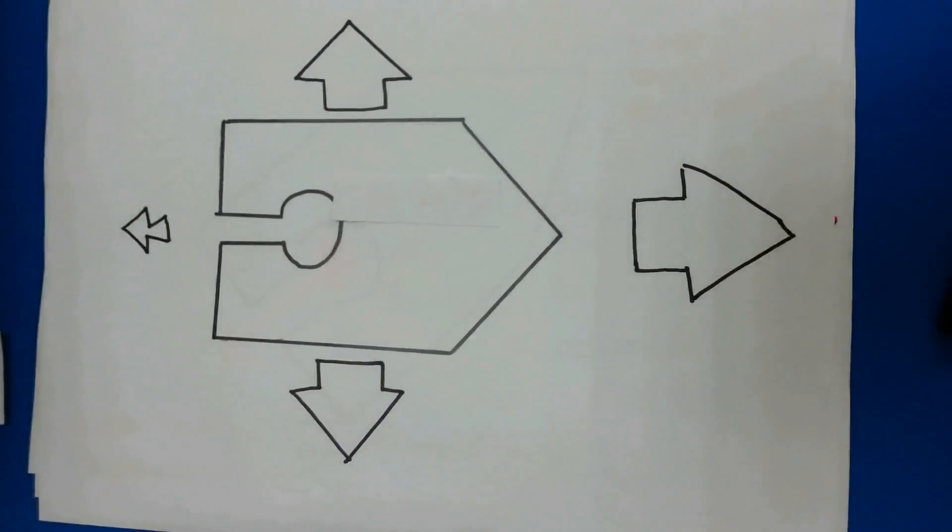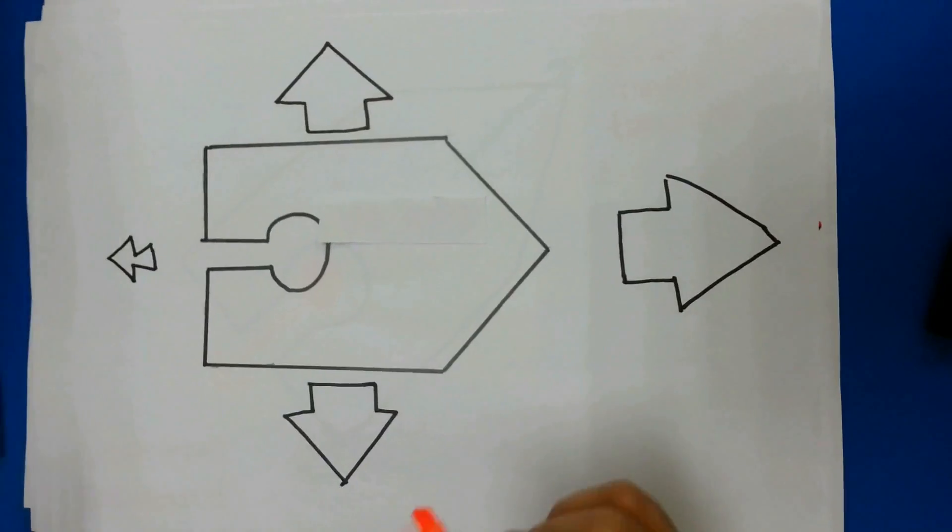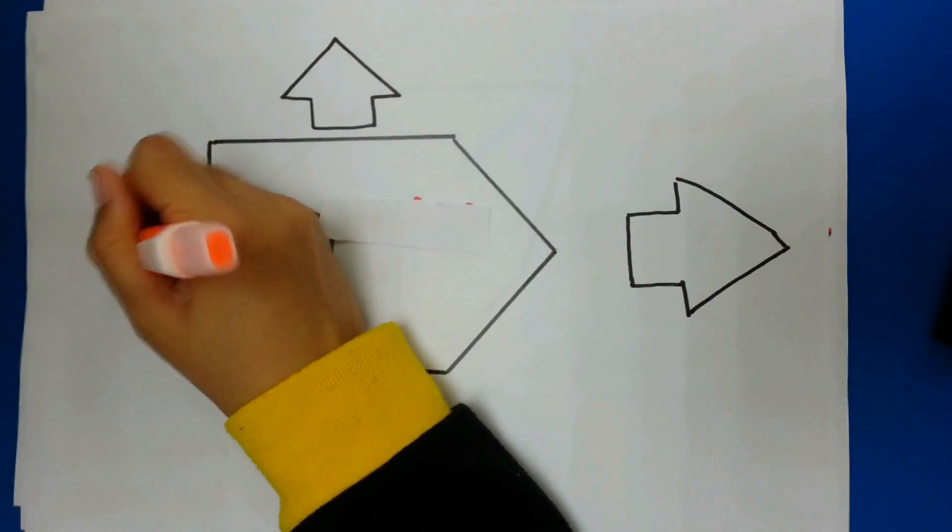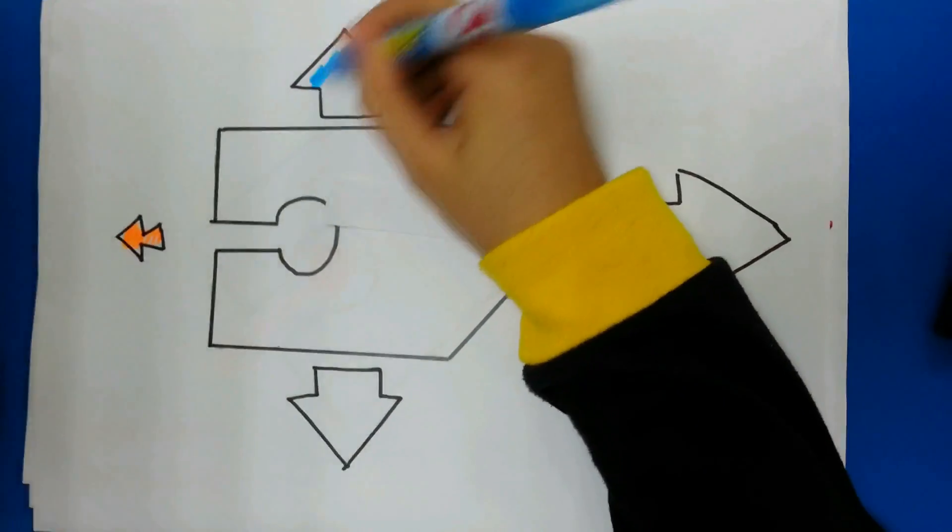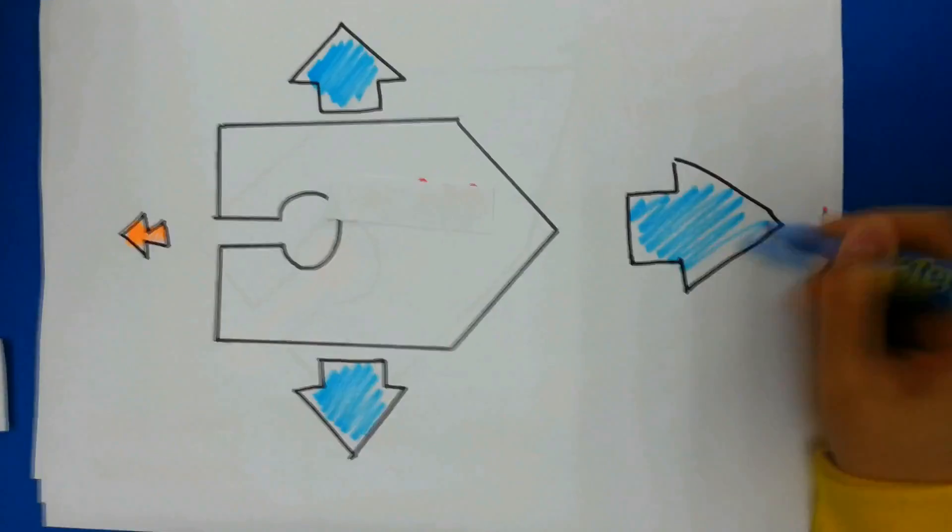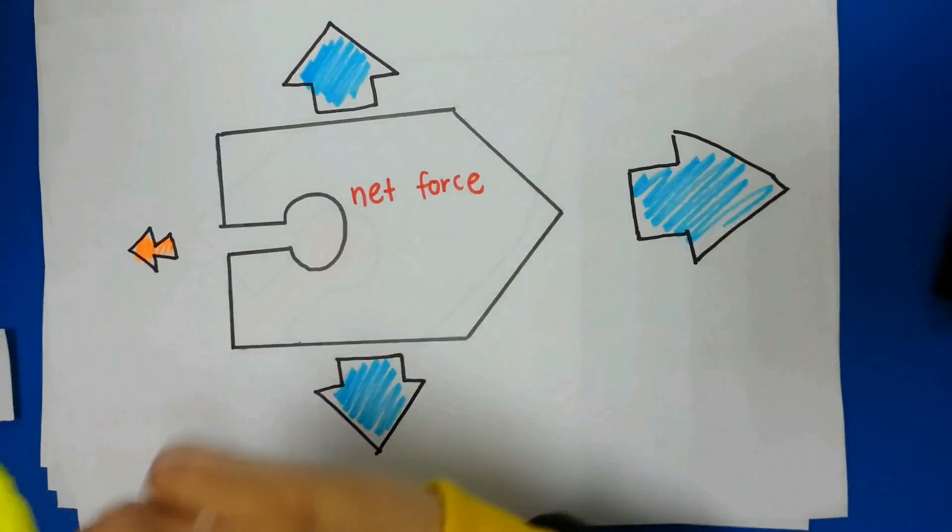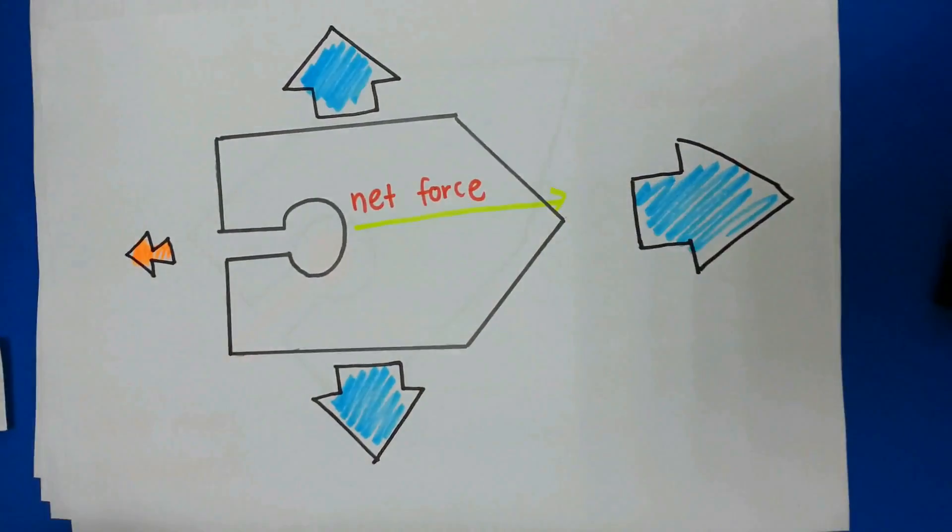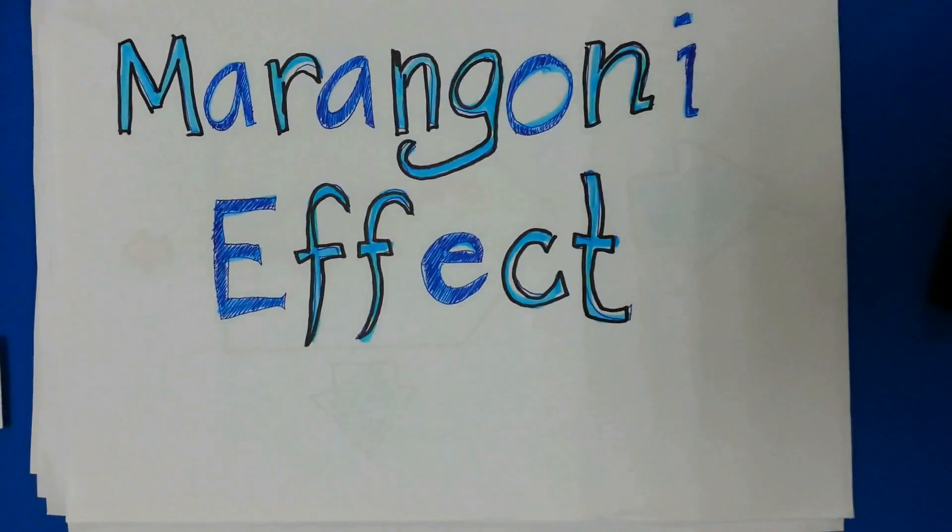Let us look more closely at what happens to the boat. The surface tension at the back of the boat is lower than the waters. However, the surface tension on the sides remain the same. Therefore, this will result in a net force which will cause the boat to move forward. This is the Meringoni effect explained.